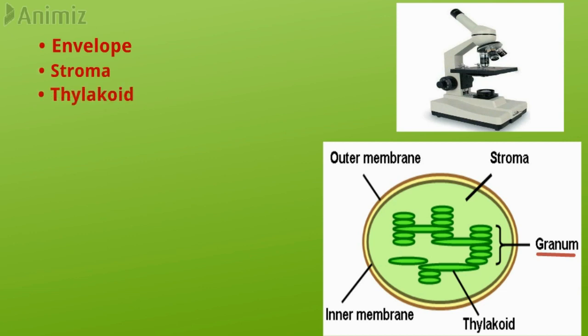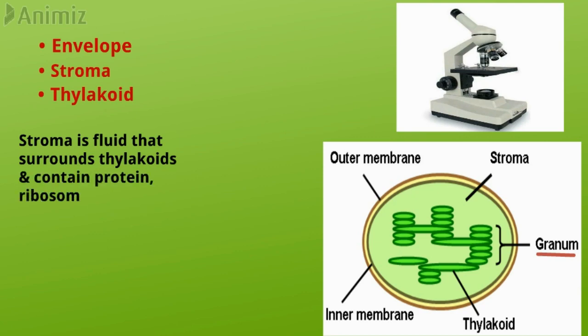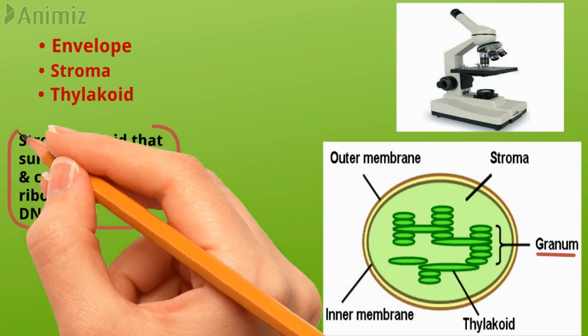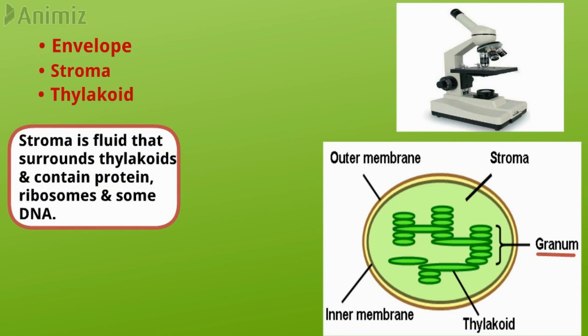The envelope is formed by a double membrane, while the stroma covers most of the volume of the chloroplast. Stroma is a fluid which surrounds the thylakoid and contains proteins, some ribosomes, and small circular DNA. It is in this part of the chloroplast where carbon dioxide is fixed to manufacture sugar.